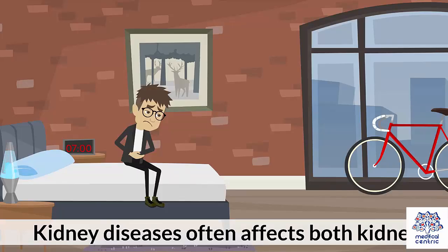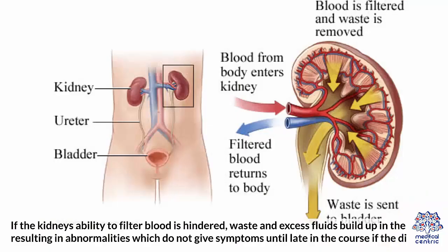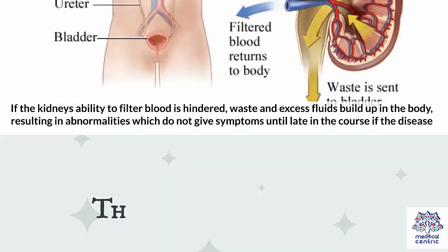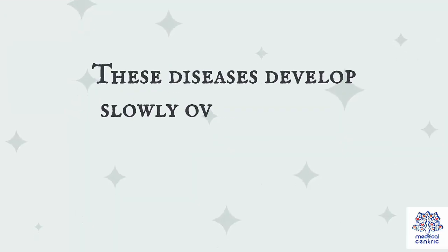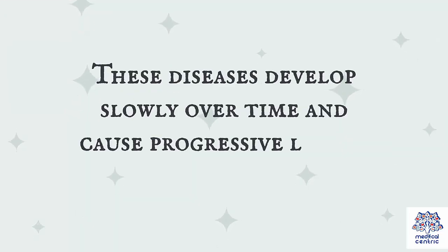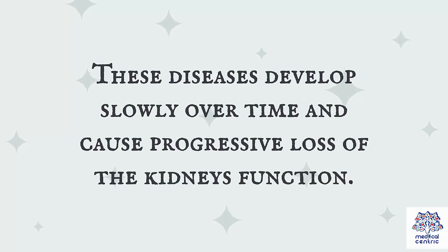Kidney diseases often affect both kidneys. If the kidney's ability to filter blood is hindered, waste and excess fluids build up in the body, resulting in abnormalities which do not give symptoms until late in the course of the disease. These diseases develop slowly over time and cause progressive loss of the kidney's function.